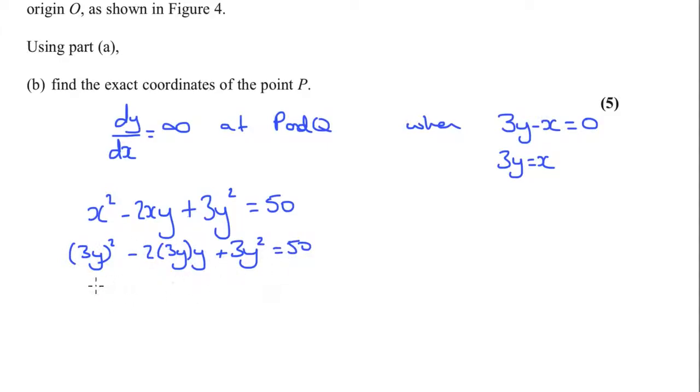If I expand all this, I'm going to get 9y squared minus 6y squared plus 3y squared is equal to 50. That is 6y squared equals 50. So, divide by 6, I'm going to have that y squared is equal to 50 over 6, which is 25 over 3.